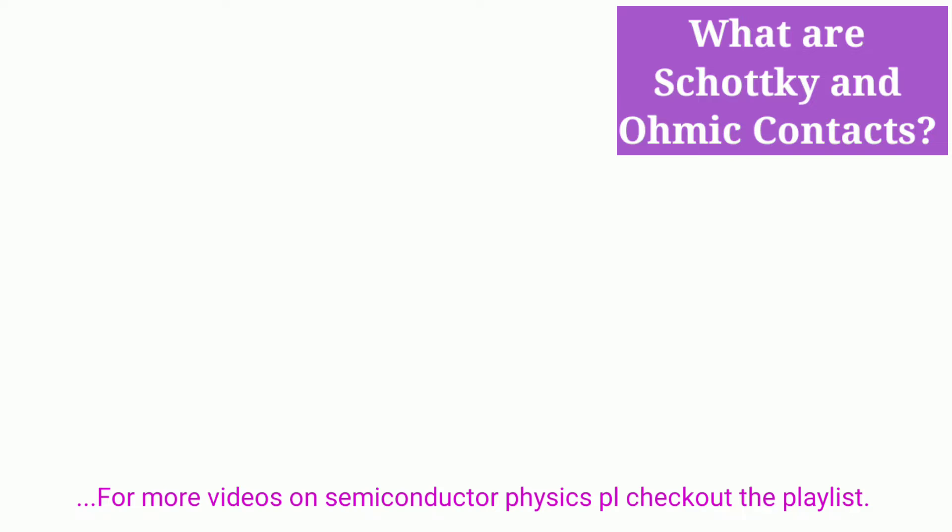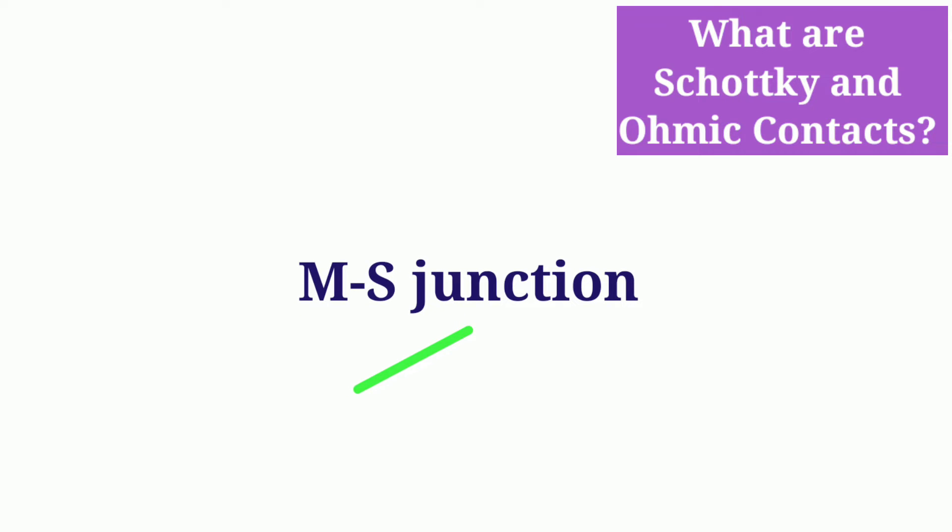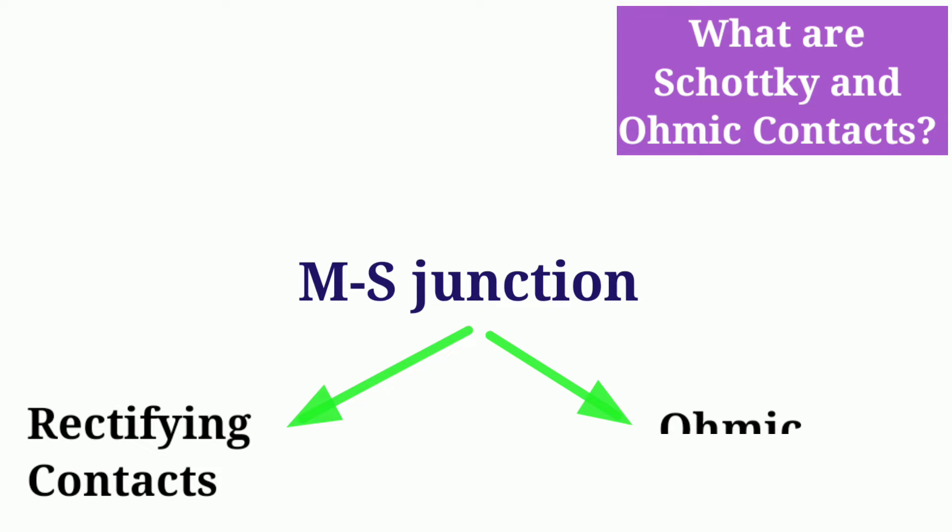When a metal and a semiconductor are joined, two possible types of contacts can result depending on the combination of metal and semiconductor used. The contacts may be rectifying, which only allows current to pass in one direction, or it could be ohmic, in which case current can pass in either direction. The first one is known as Schottky junction and the other one ohmic junction.